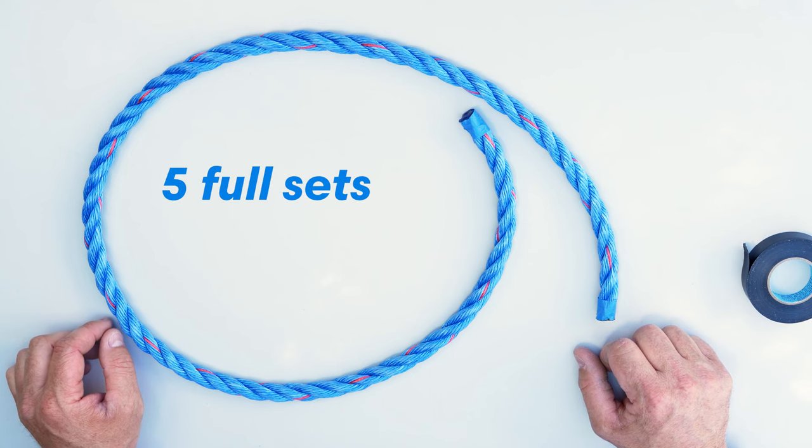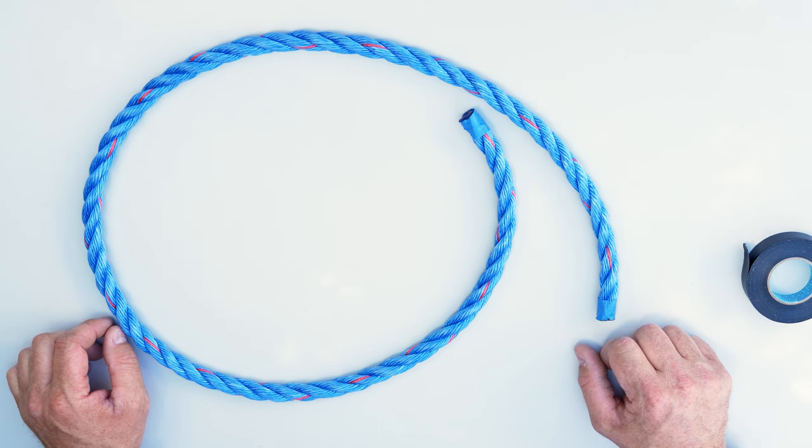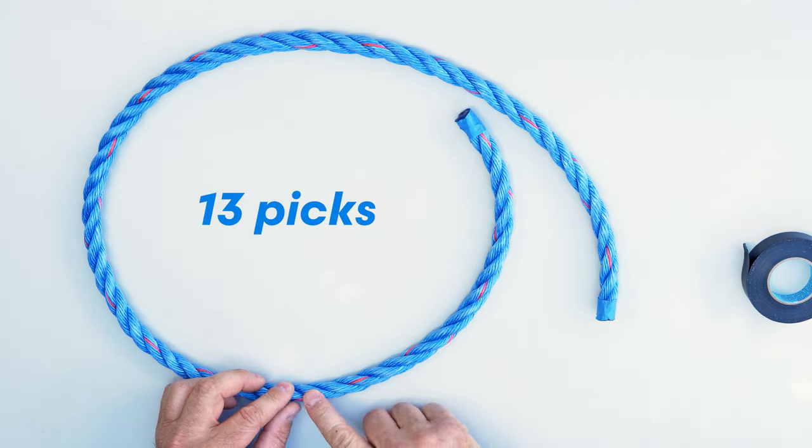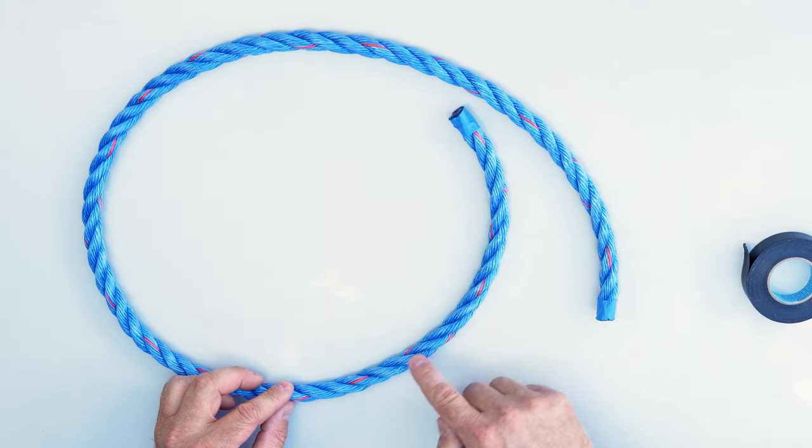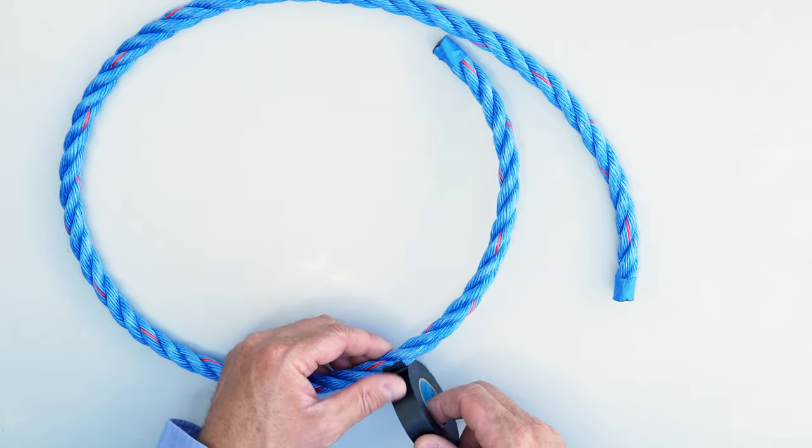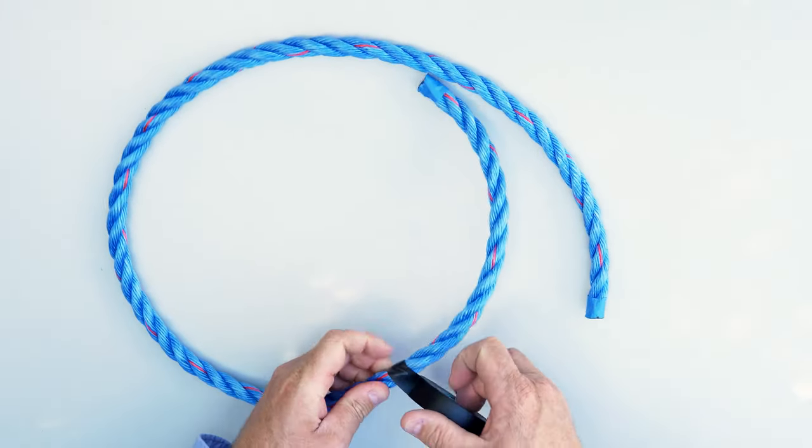For synthetic ropes you need five full sets of tucks. That's going to require about 13 picks worth of distance from the end of the rope. Count out 13 picks, put a piece of tape to stop the de-stranding at that point.